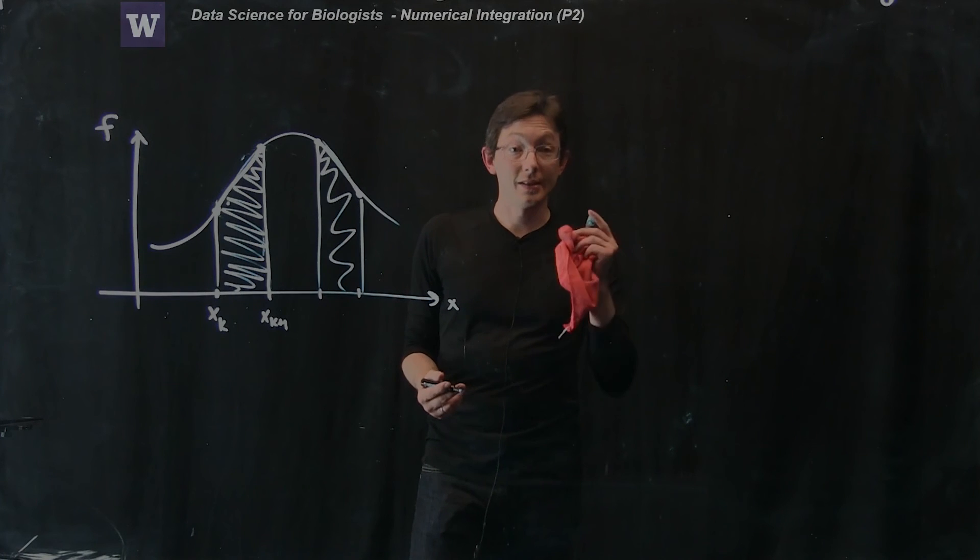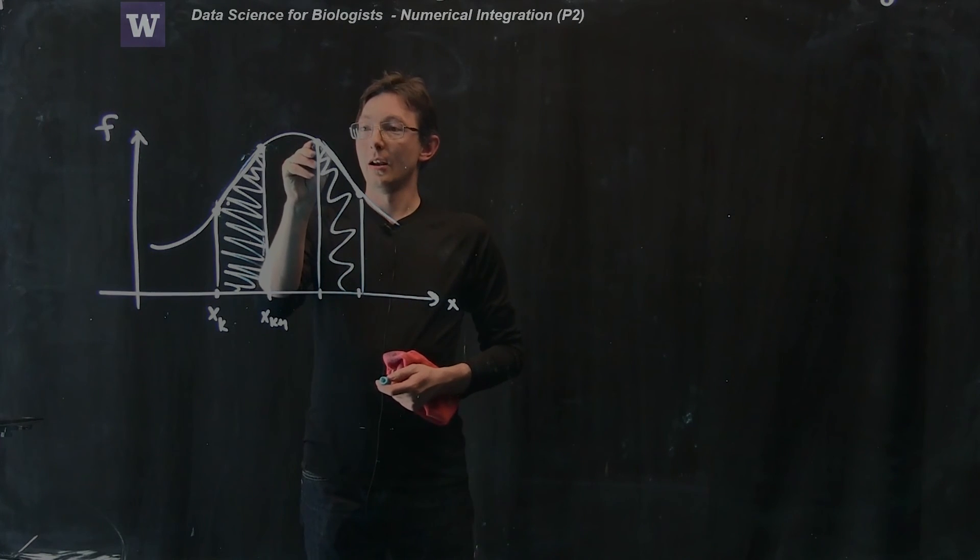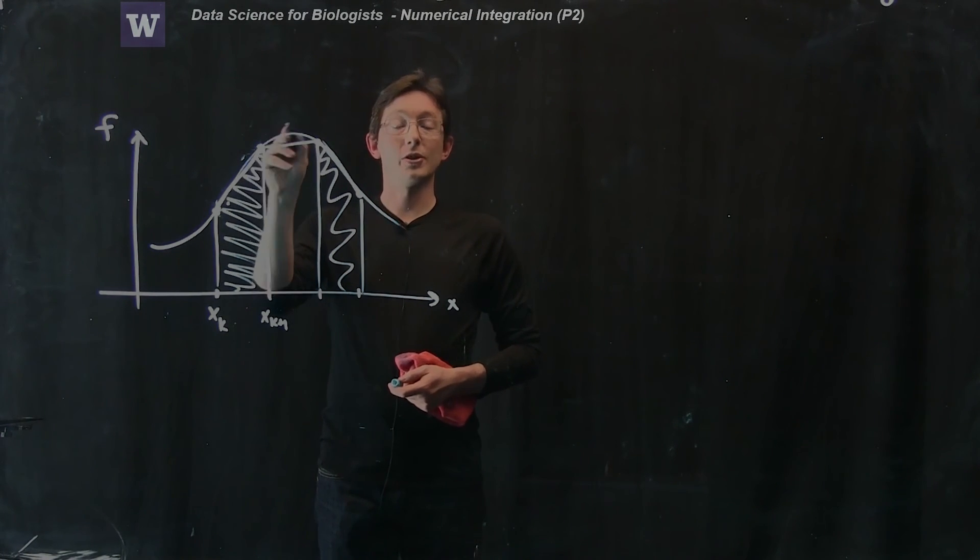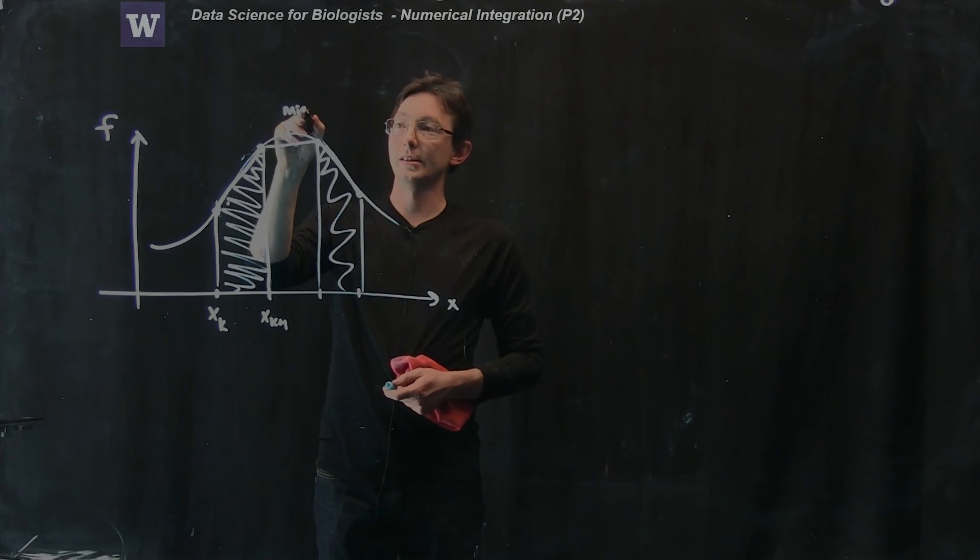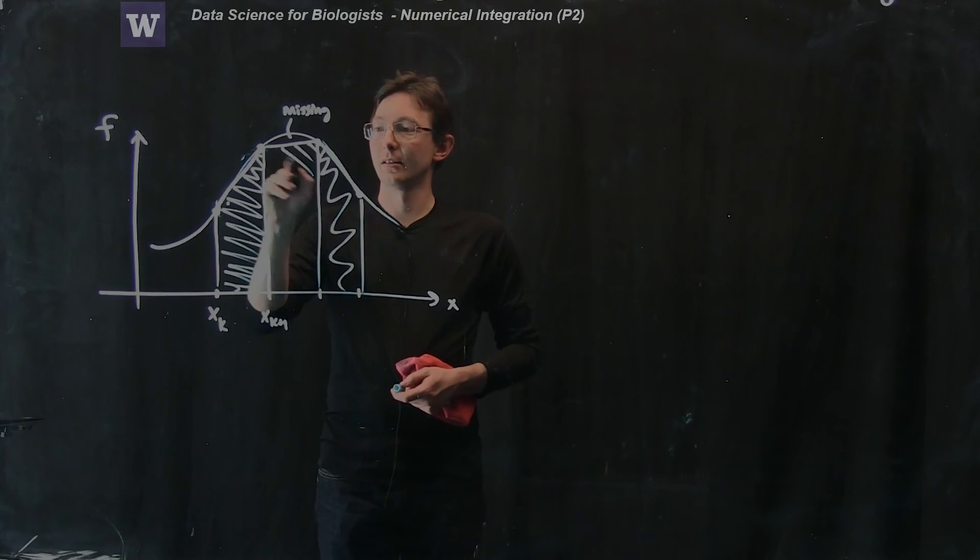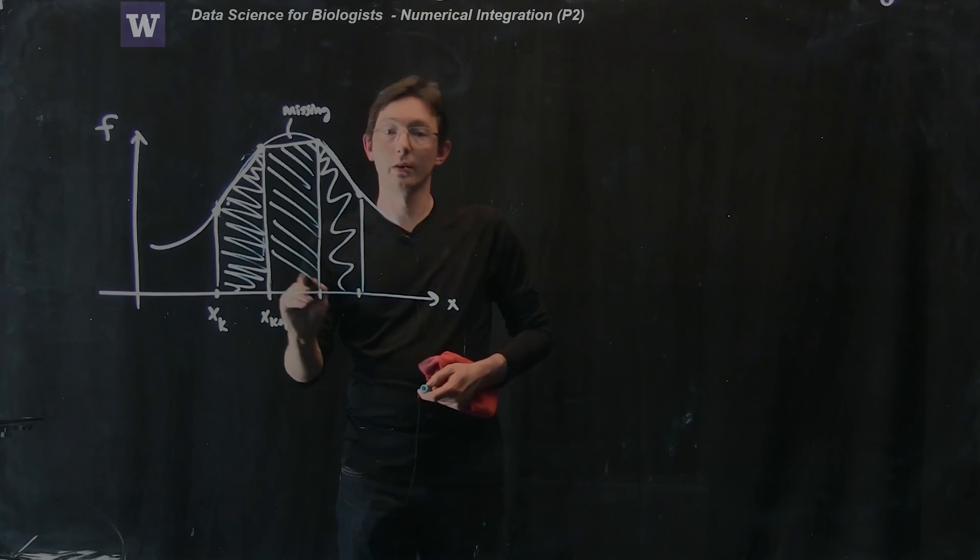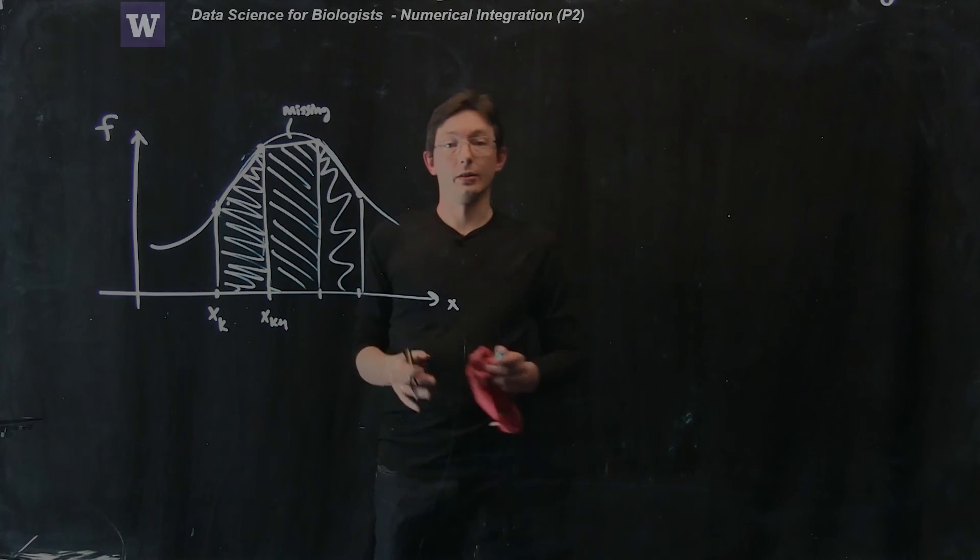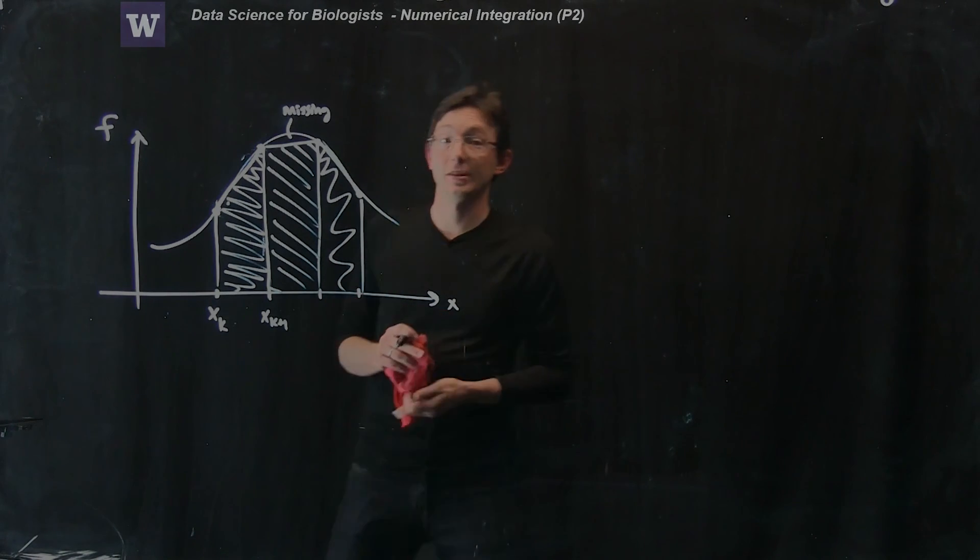The only places it doesn't do a good job are in regions where my function has a lot of curvature. We're under predicting, we're missing all of this. But this still looks a lot more accurate than left or right rectangle rules. This is called trapezoidal integration.